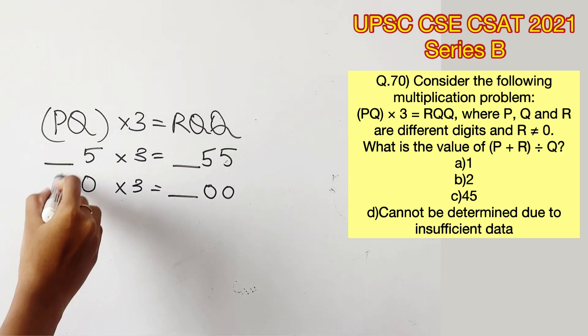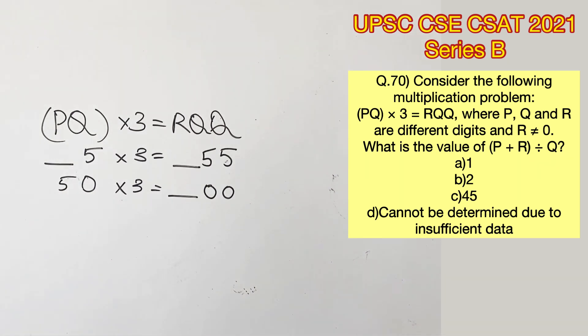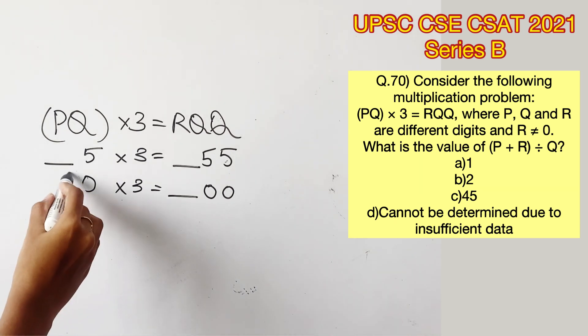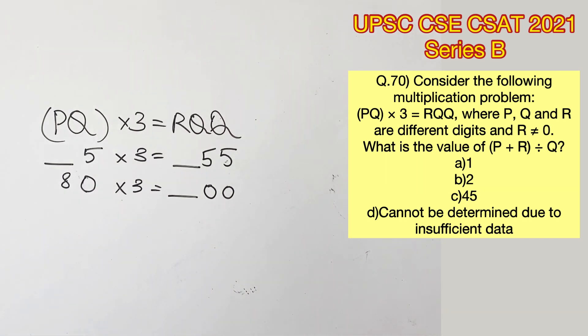3 will give us 90. 4 will give us 120. 5 will give us 150. 6 will give us 180. 7 will give us 210. 8 will give us 240. 9 will give us 270. Which means there is no possibility that will satisfy this equation ending with two zeros.